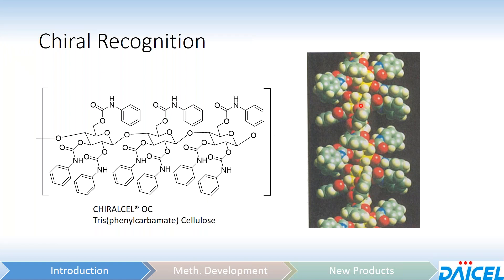In forming this structure, you see these little pockets, which we call chiral grooves. These chiral grooves are important because that is where the analyte is going to interact with the selector. You can see here that the phenyl groups as selectors form all sorts of different orientations throughout these chiral grooves, and those orientations are going to dictate whether a stationary phase will or will not separate.